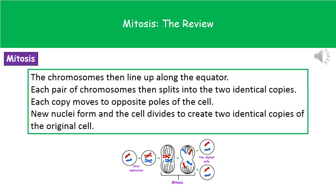Then the rest of the cell divides, and what we end up with are two identical copies of the original cell. The diagram at the bottom shows what's happening at each stage: starting with our original cell, the DNA is replicated by unzipping and complementary base pairing. Then the chromosomes line up along the equator, the copies are pulled to opposite poles of the cell, a new nucleus forms, and the rest of the cell divides to make two identical copies.